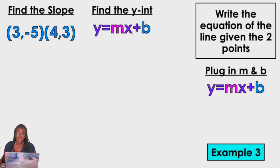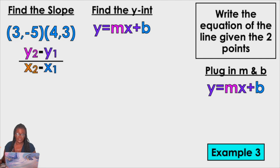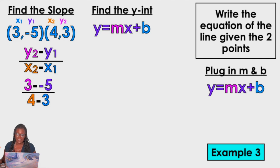Let's try some more — this is slide 5 out of 12. Find the slope. Label your points X1, Y1, X2, Y2. Plug in your slope. Notice that we have 3 minus negative 5 — what's minus minus? It's going to turn into a plus. So I'm going to get 8 over 1, which is positive 8.